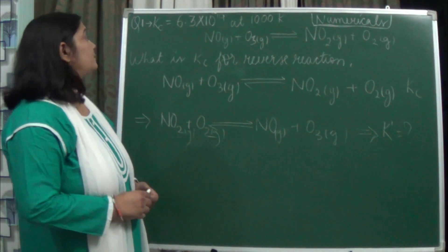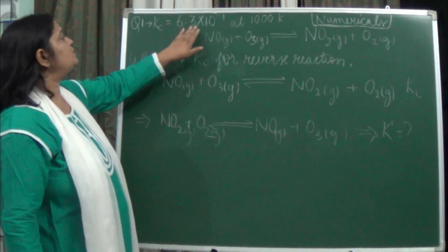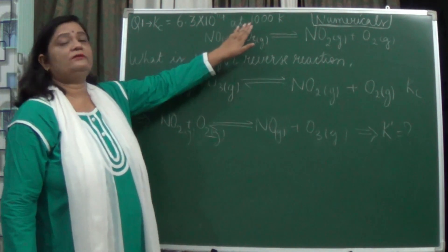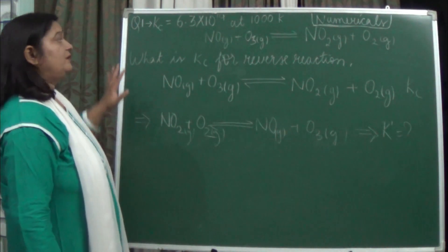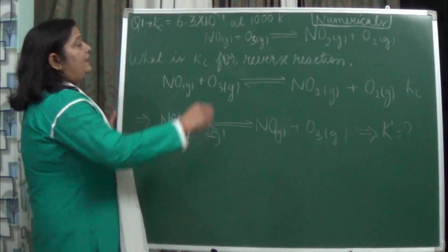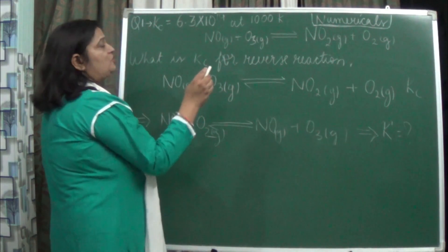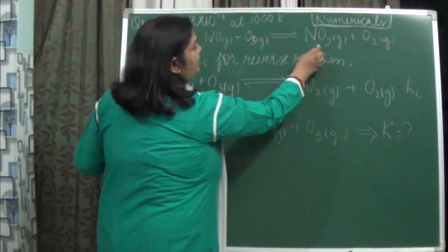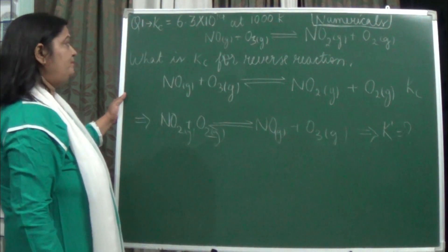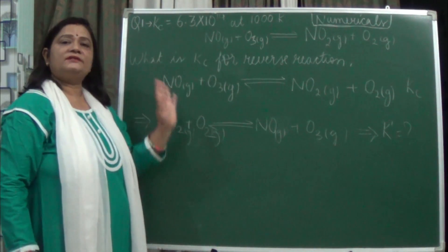The first question: Kc is equal to 6.3 into 10 to the power 14 at 1000 Kelvin. So the value of Kc is given at 1000 Kelvin. An equation has been given: NO plus O₃, both in the gaseous state, equilibrium sign giving NO₂ plus O₂. The question is asking: what is the Kc for the reverse reaction?